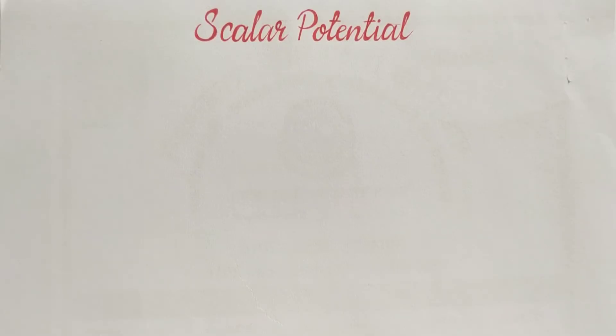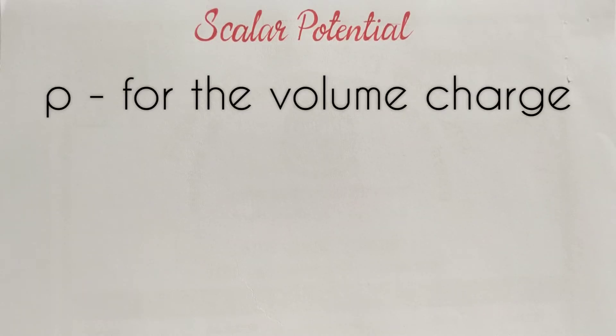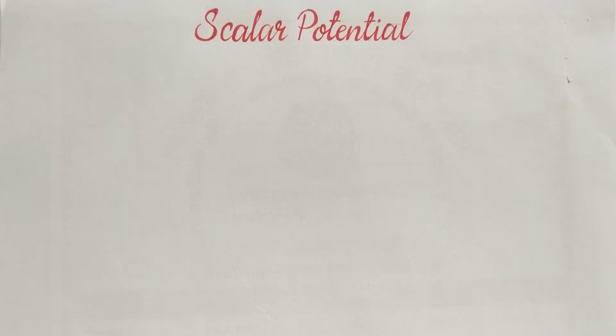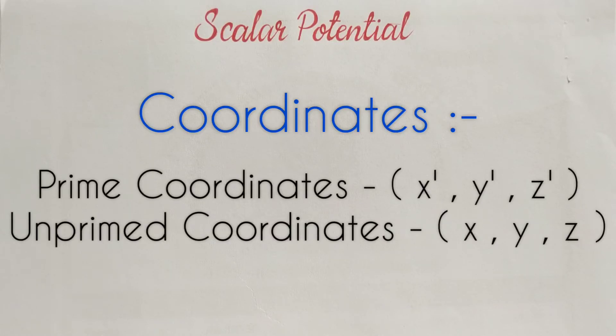Let's consider general case for Coulomb's law of volume charge. We know that we take rho for the volume charge and d tau is the volume element. Here we will take two coordinates: prime coordinates x dash y dash z dash and unprimed coordinates x y and z.